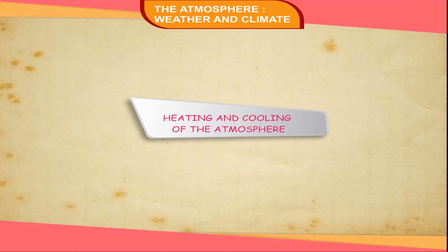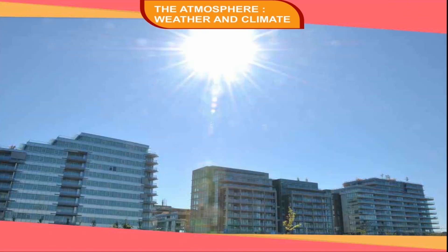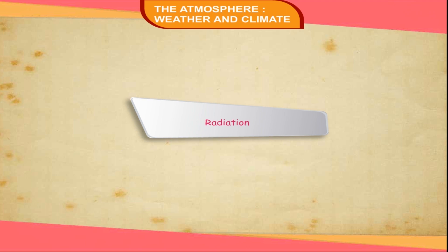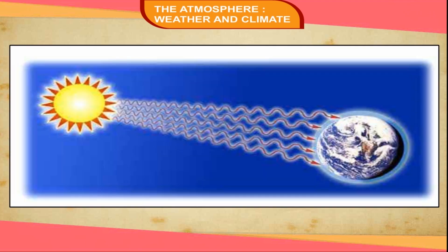Heating and Cooling of the Atmosphere. The temperature at a particular place does not remain constant; it varies with the time of day and year. The sun is the only source of atmospheric heat, but the atmosphere absorbs very little of the sun's radiation. Solar radiation heats the ground first, and from the ground surface, the heat is transferred to the atmosphere through these processes. Radiation is the direct heating of an object by the transmission of heat waves. The atmosphere absorbs very little incoming solar radiation but absorbs heat radiated from the earth's surface, called terrestrial radiation.